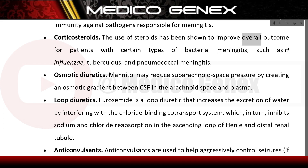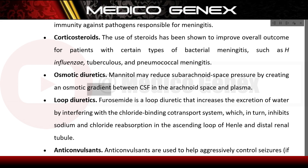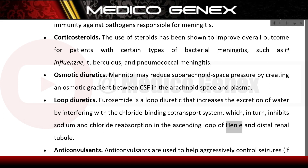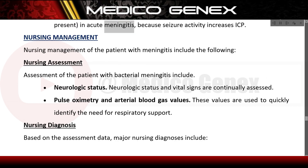Corticosteroids have been shown to improve overall outcomes in certain types of bacterial meningitis, such as H. influenzae, tuberculous, and pneumococcal meningitis. Osmotic diuretics such as mannitol may reduce subarachnoid space pressure by creating an osmotic gradient between CSF and plasma. Furosemide, a loop diuretic, increases water excretion by interfering with the chloride-binding co-transport system, inhibiting sodium and chloride absorption. Anticonvulsants are used to aggressively control seizures in acute meningitis, as seizure activity increases ICP.